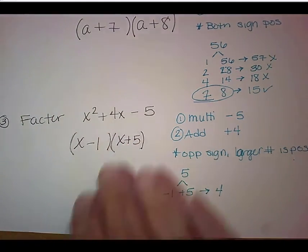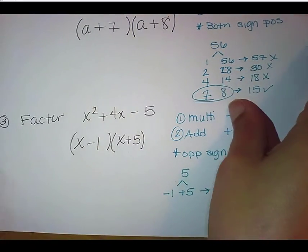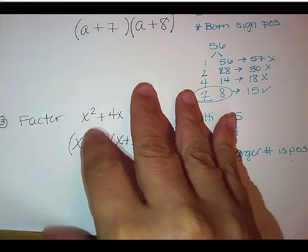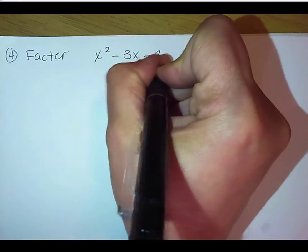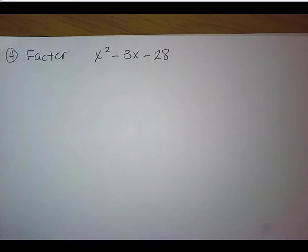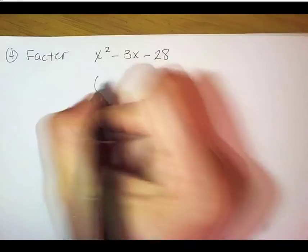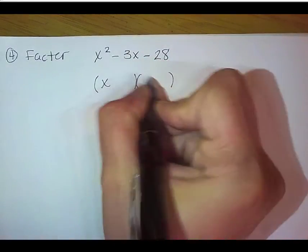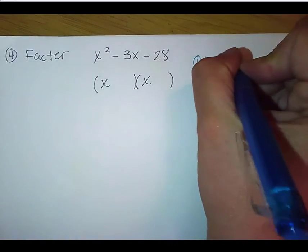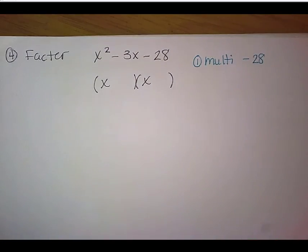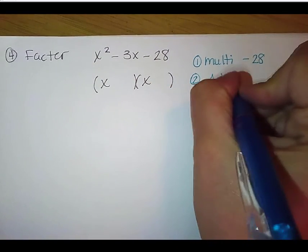Let's do one more example for our factoring. So we have our fourth example here. We're going to factor x² minus 3x minus 28. Again, starting off by creating our two parentheses, having them lead off with x.